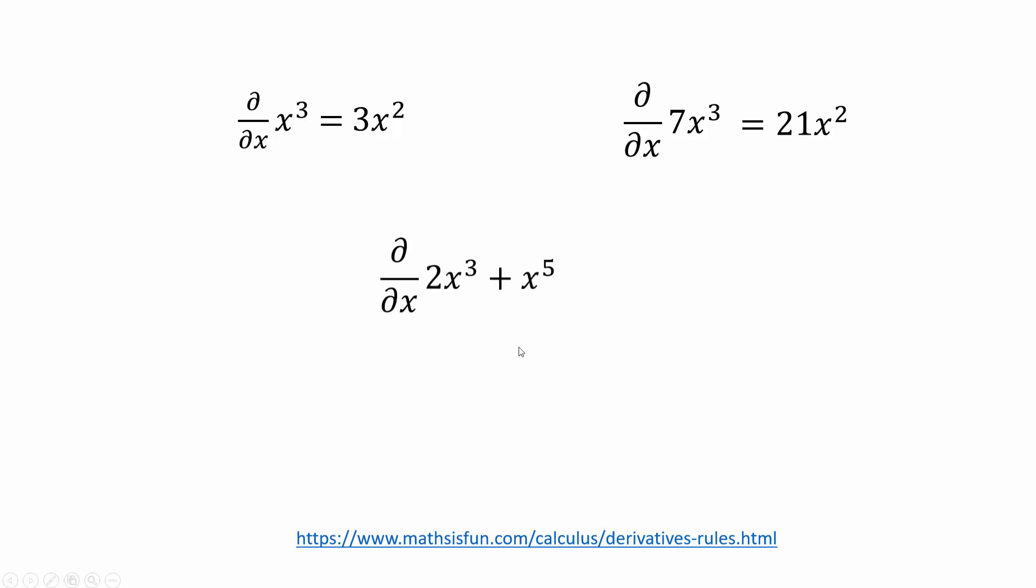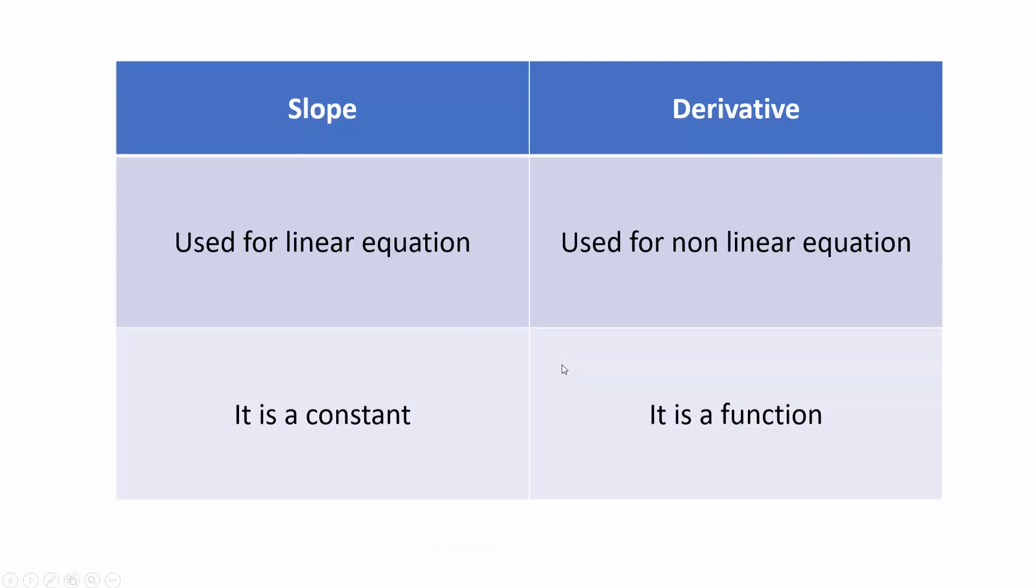When you have an equation like this, again you can apply the power rule on individual components and you get a derivative which looks something like this. Just to summarize quickly the difference between slope and derivative: slope is used for linear equations, straight lines; derivative is used for nonlinear equations. Slope is a constant, whereas derivative is a function.